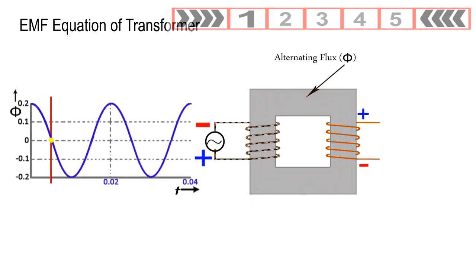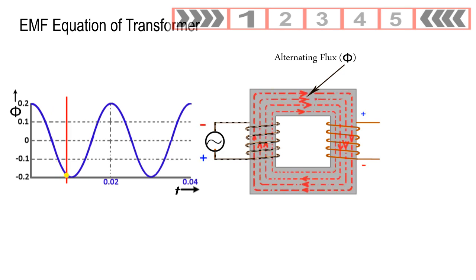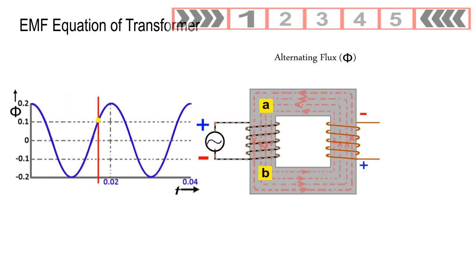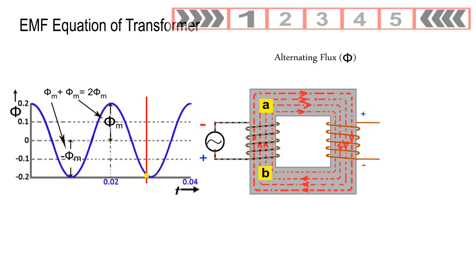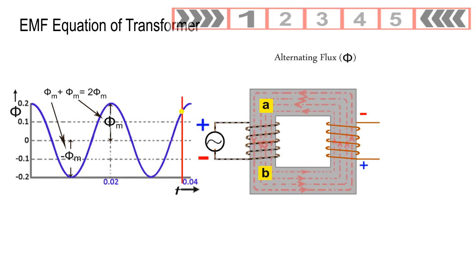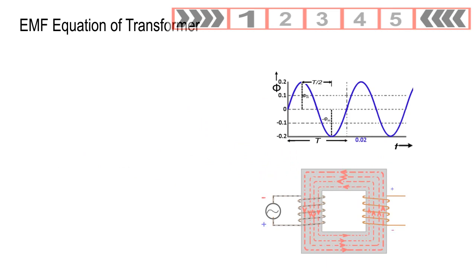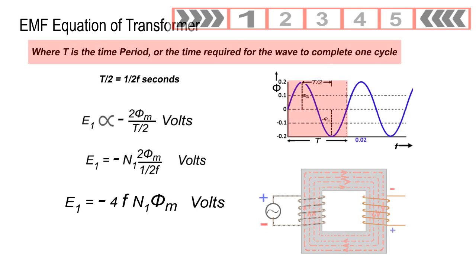We can see that the mutual flux varies sinusoidally with time between points A to B, and the total change of flux is 2φM webers. This change of flux occurs in a half cycle of time, i.e., T by 2 seconds, where T is the time period or the time required for the wave to complete one cycle.